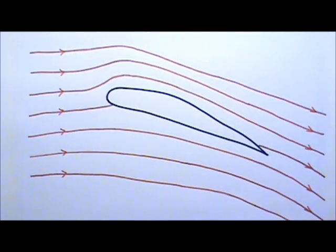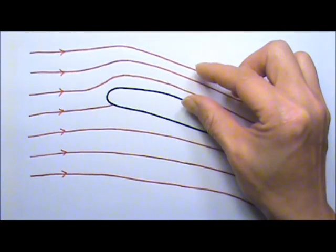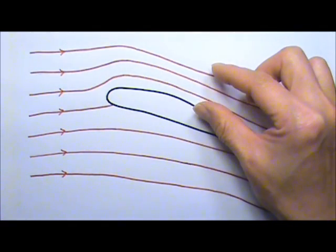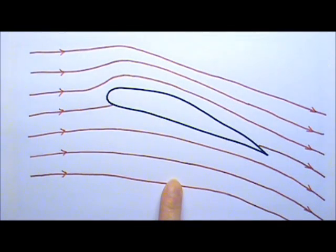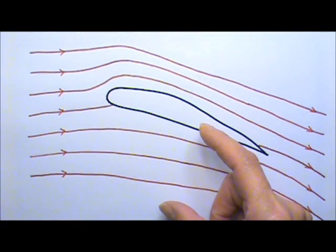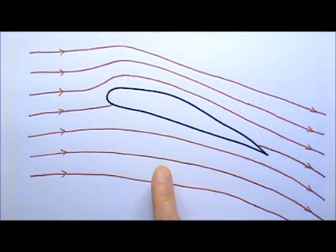Because of the equation of continuity, constriction means the flow speed increases. Below the wing, the opposite happens. See how the streamlines are not as dense? This means the flow speed decreases slightly below the wing.